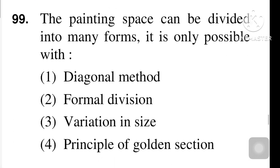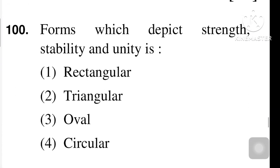Next question: the painting space can be divided into many forms — it is only possible with — option number four, principle of the Golden Section, is the right answer. Next question: the form which depicts strength, stability, and unity — is it rectangular, triangle, oval, or circular shape? The right answer is option one, rectangular shape.